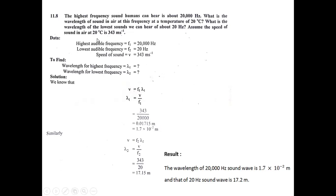The speed of sound at 20°C (close to room temperature) is 343 meters per second — the same for both waves. The highest audible frequency f₁ = 20,000 Hz, and the lowest audible frequency f₂ = 20 Hz. We need to find wavelength λ₁ for f₁ and wavelength λ₂ for f₂. We use the wave equation v = fλ, derived in Year 10.